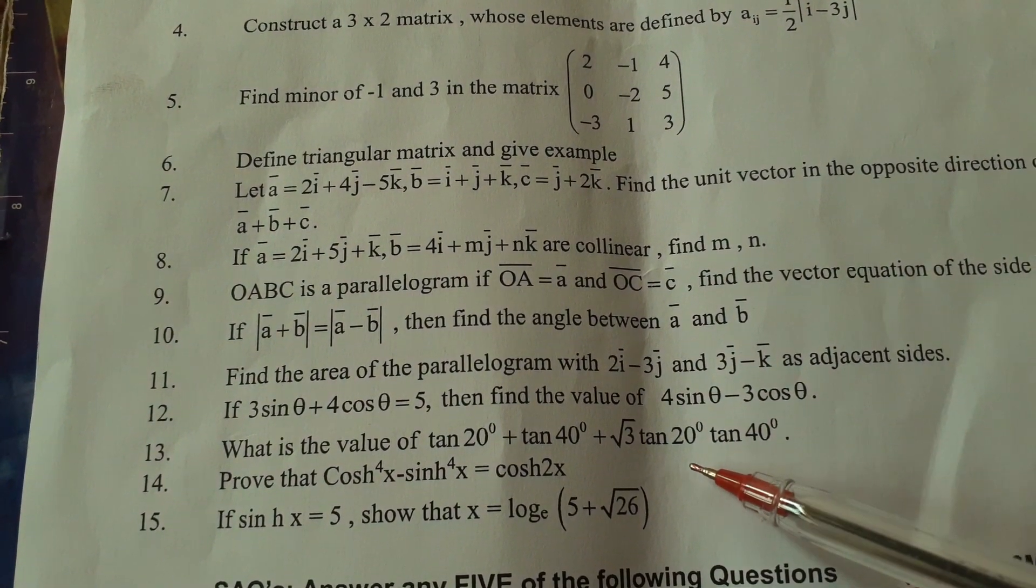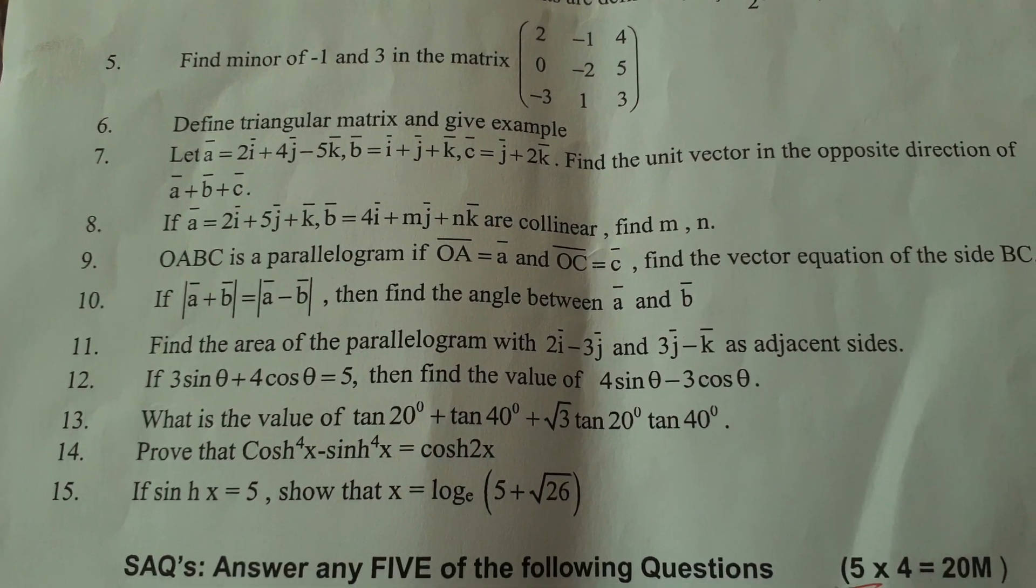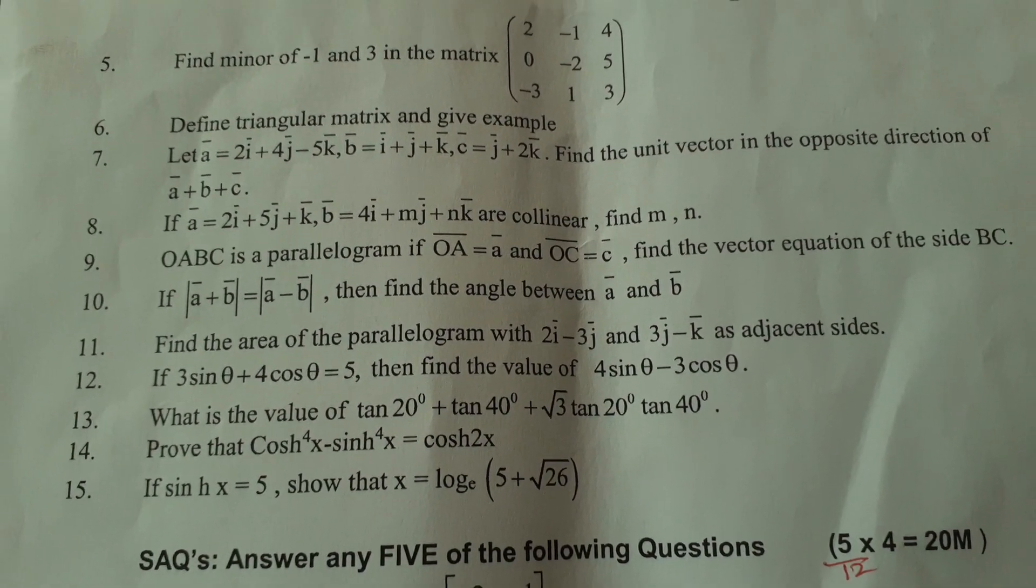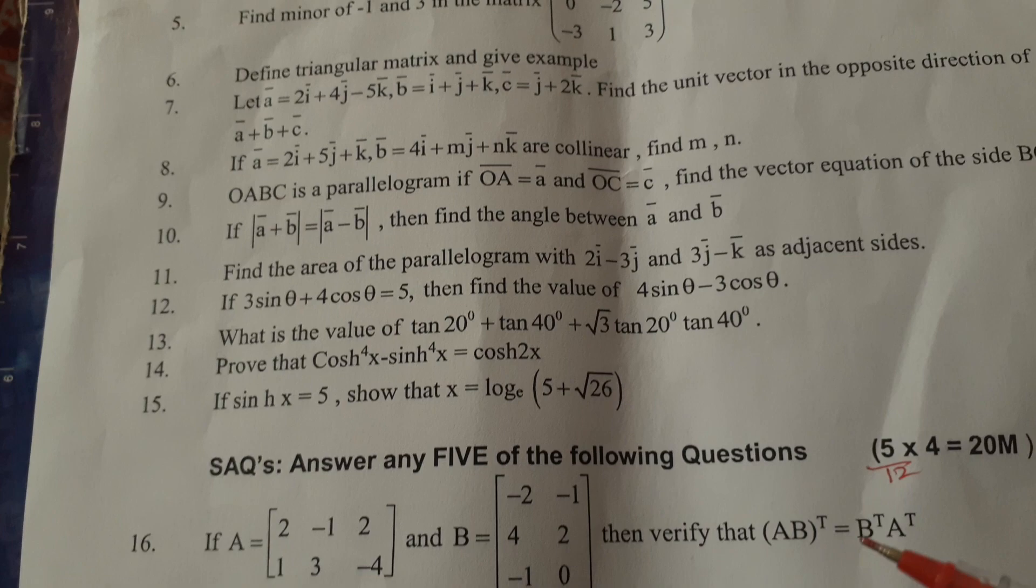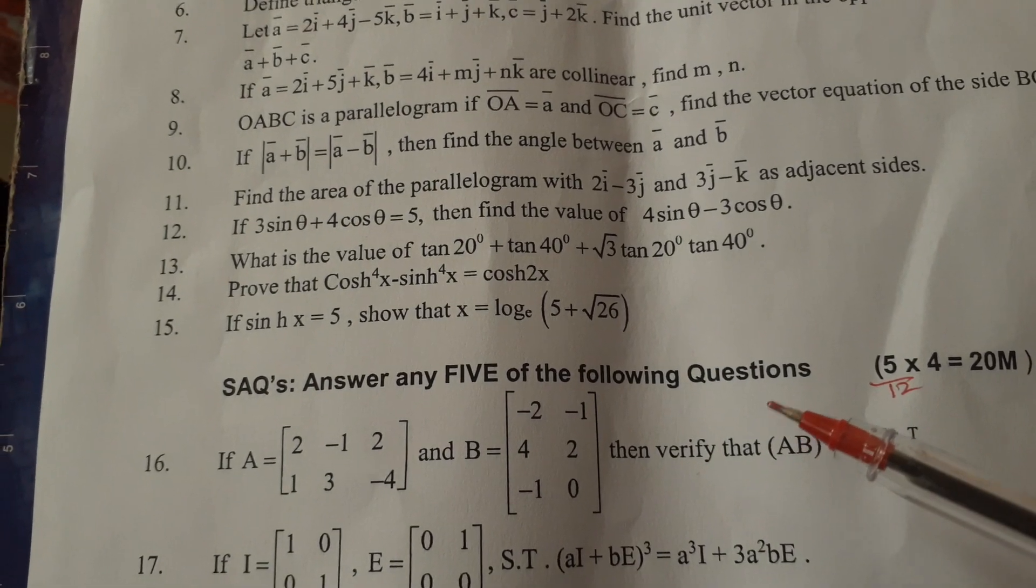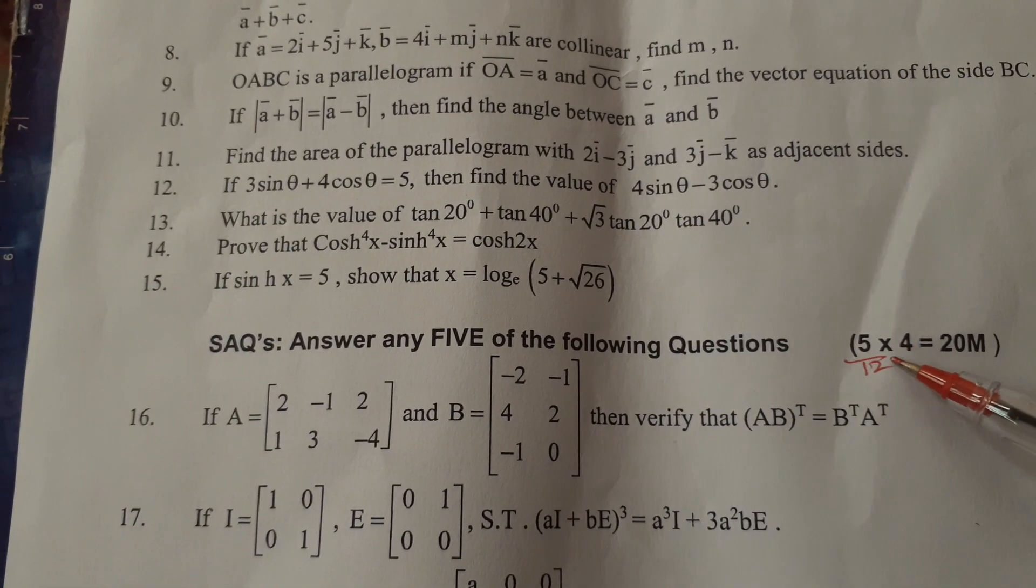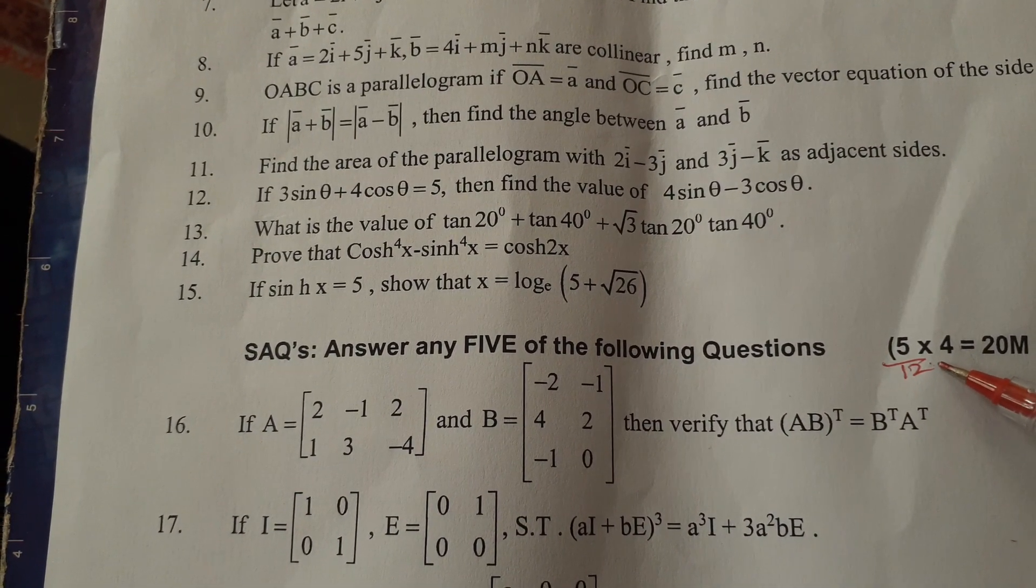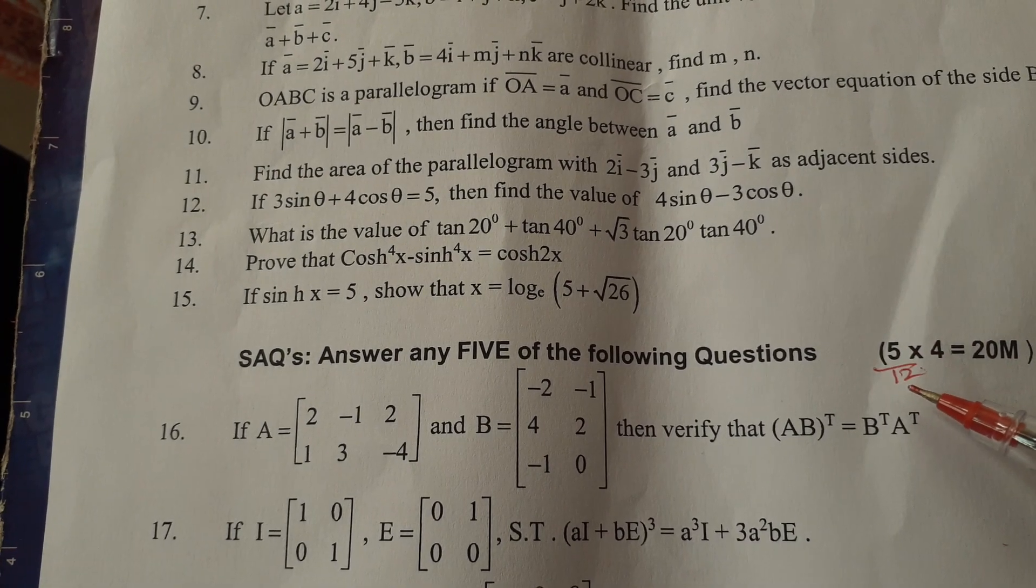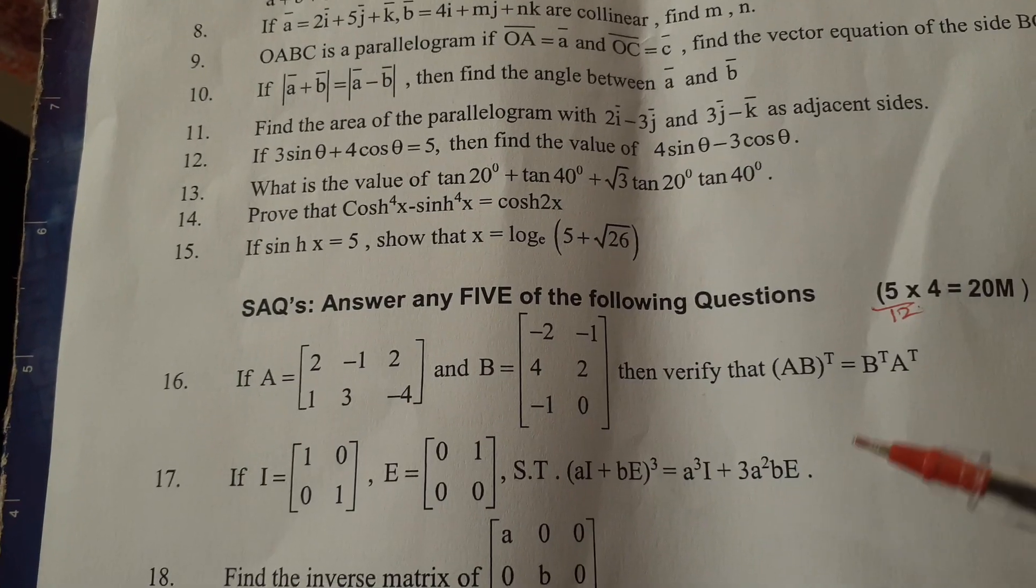Out of 15, 10 only we have to answer. Now come to the second part, short answer questions. In short answer questions, 12 questions are given and 5 only we have to answer. Each one carries 4 marks. VSAQs each one carries 2 marks, SAQs each one carries 4 marks. Out of 12, 5 only we have to answer. 5 times 4 is 20, 20 plus 20, 40 marks are over so far. This is a 75 mark paper with 3 hour duration.